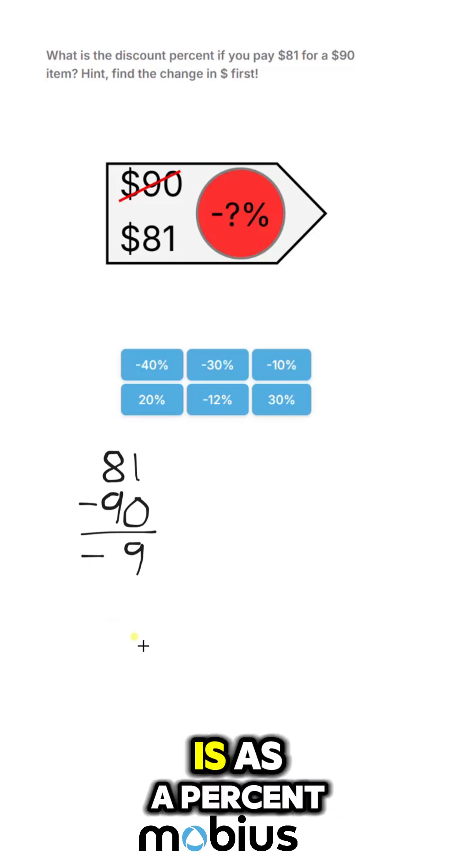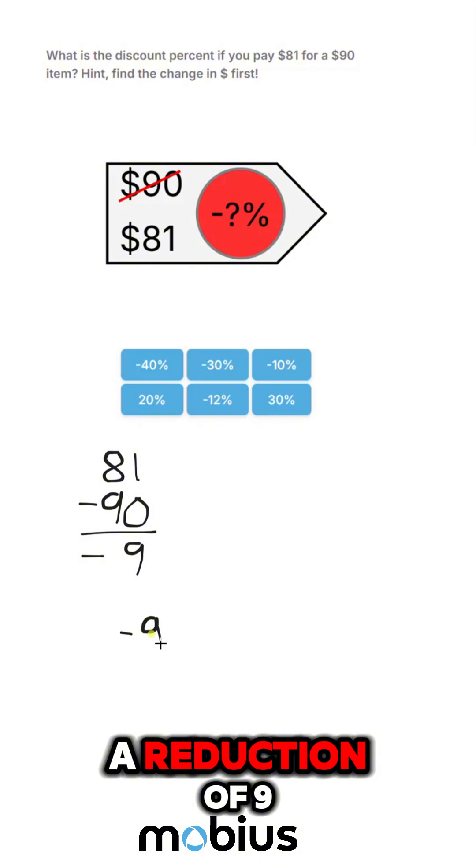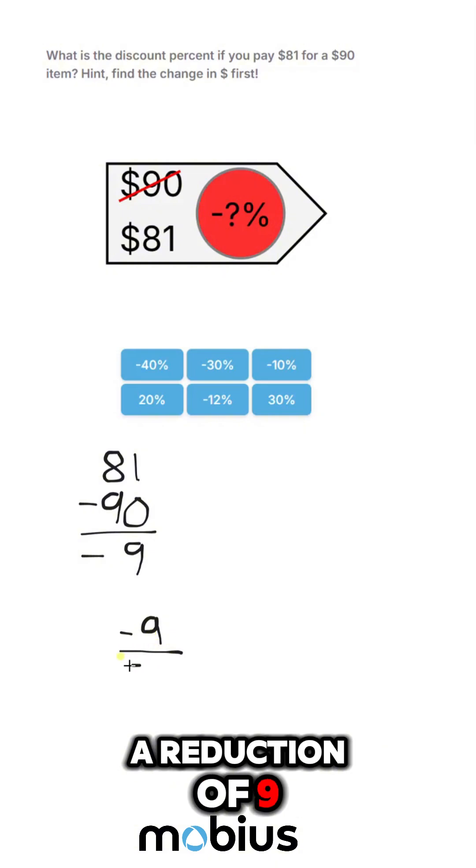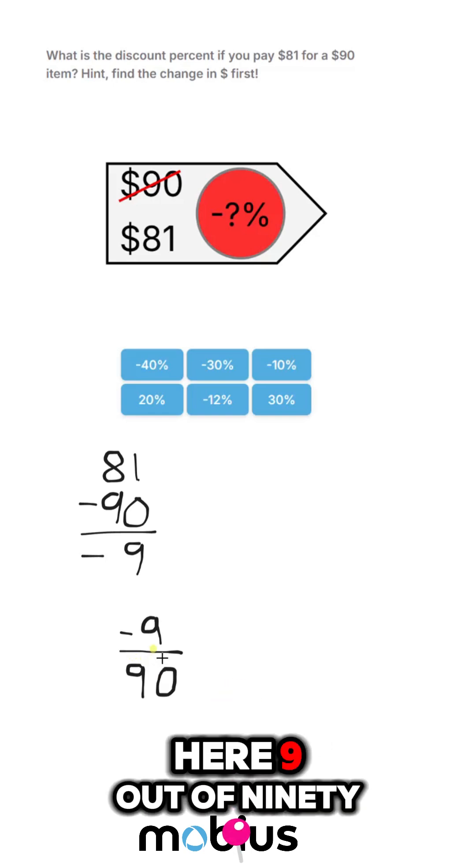and we need to find out what that is as a percent. So if we look at the reduction of 9 from an original price, we want to start with the original price, not the final price. Here, 9 out